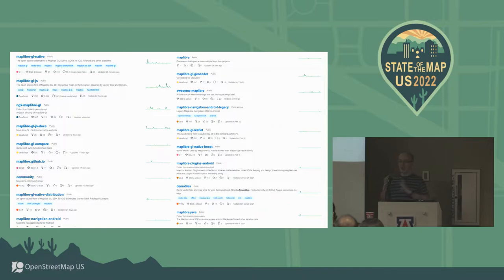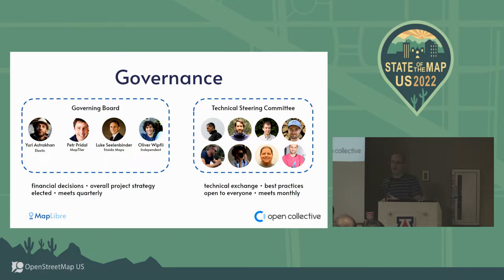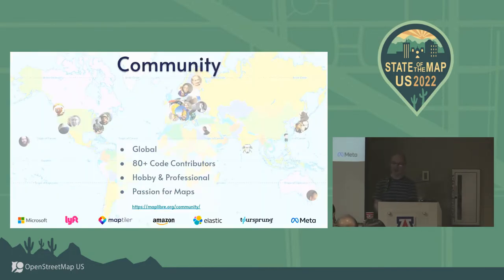We are very liberal in terms of giving out permissions. If you want to take ownership of something, just please do - we don't want to be the gatekeepers. We want the community to collaborate as much as possible. For governance, we have an interim governing board - just the first people who got organized. As time goes on, we should get the governing board to be the people who are active in the project. There's also a technical steering committee, much more open, where anyone can participate to discuss technical direction. The governing board will be reelected - it's an elected system. We have over 80 code contributors by now.